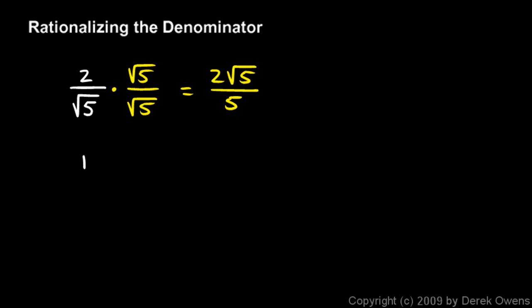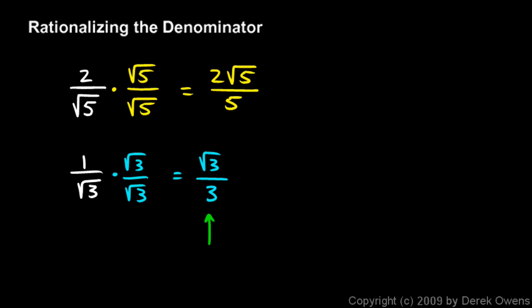Let's look at the next example: 1 over the square root of 3. The same approach applies here. I'm going to multiply by the square root of 3 over the square root of 3. When I do this, I end up with the square root of 3 on top, and the square root of 3 times the square root of 3 is simply 3. So 1 over the square root of 3 is the same thing as the square root of 3 over 3, which is considered properly simplified because there are no irrational numbers in the denominator.